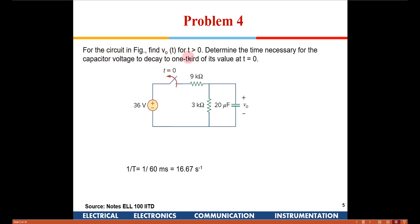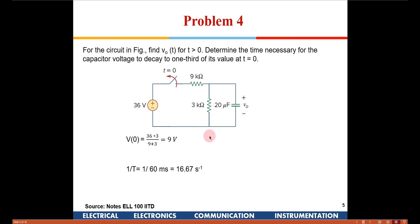This next problem says: for the circuit, find V₀ for t greater than 0, and determine the time necessary for the capacitor to decay to one third of its value at t equals 0. At t equals 0, the switch is closed, and since this is open circuit, the voltage across the 3 kilohm is available across V₀. Using the voltage divider rule: 36 × 3 divided by (9 + 3) equals 9 volts. That is the initial voltage across the capacitor. Once the switch is open, only 3 k and 20 microfarads remain, giving a time constant of 3k × 20 = 60 milliseconds.